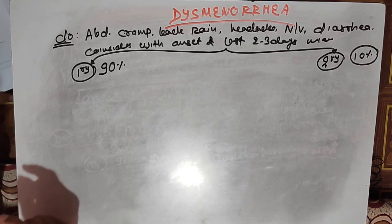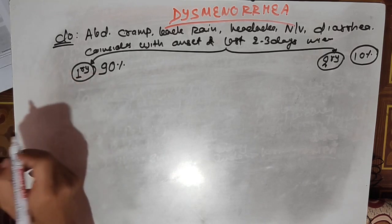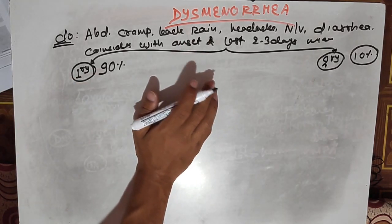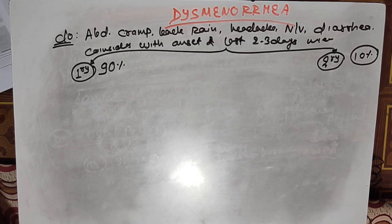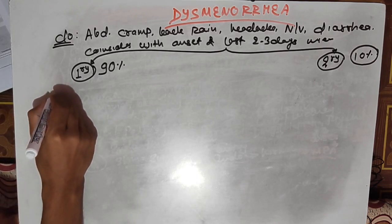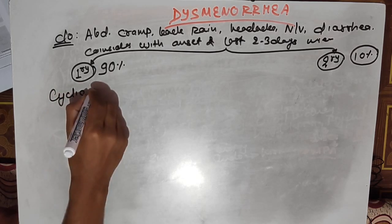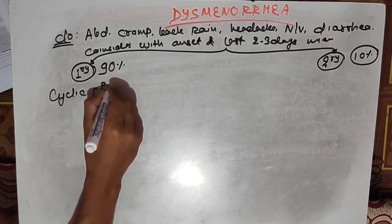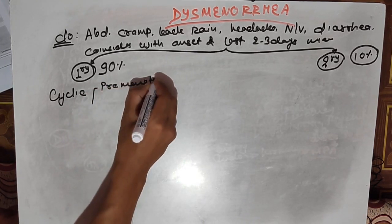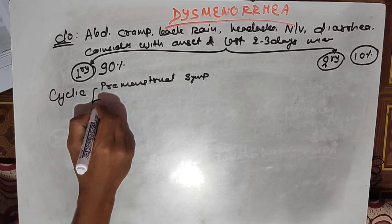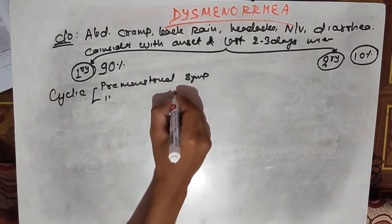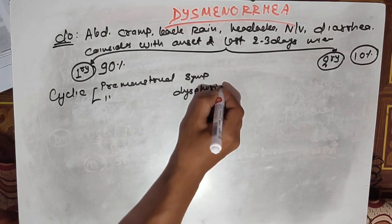Primary dysmenorrhea does not have any underlying pathology, whereas secondary does have some pathology. Sometimes dysmenorrhea may be associated with cyclic symptoms. These cyclic symptoms can be either premenstrual symptoms or can present as premenstrual dysphoric disorder.